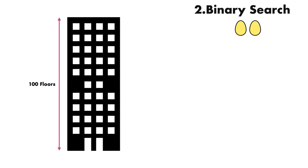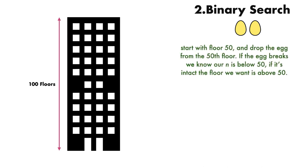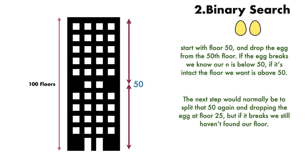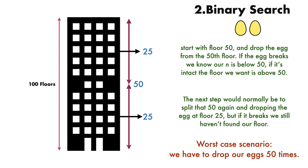The next approach is binary search. We can immediately rule out binary search because we only have two eggs. With a binary search strategy, we would start with floor 50. If the egg breaks, we know our n is below 50. If it's intact, the floor we want is above 50. The problem is now we have lost an egg and only narrowed down our search by 50 numbers. The worst case scenario, we have to drop our eggs 50 times. So this binary search is not going to help in this case.